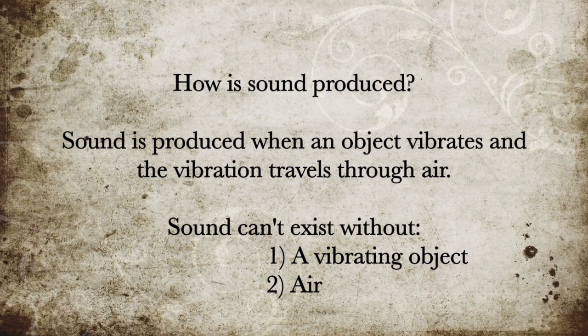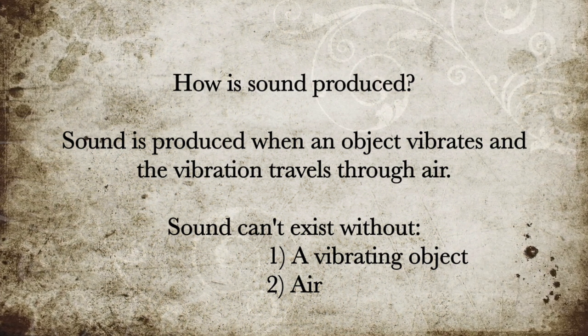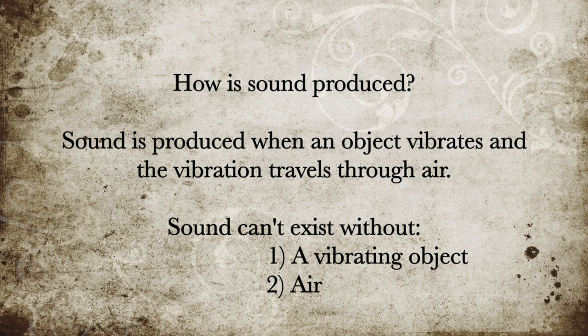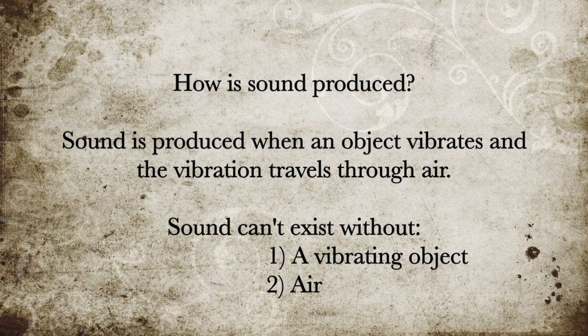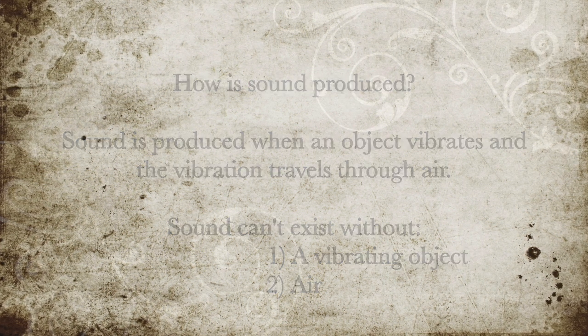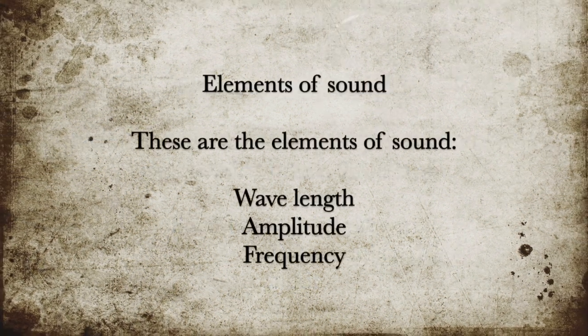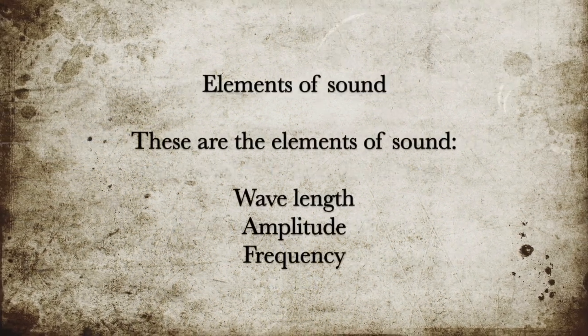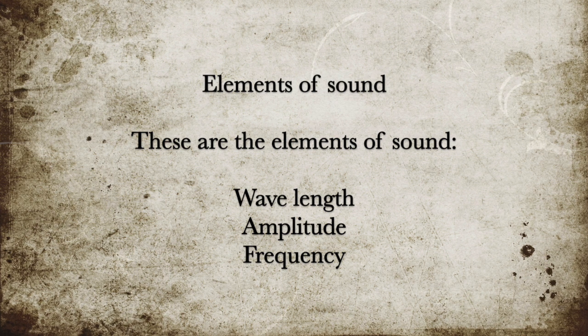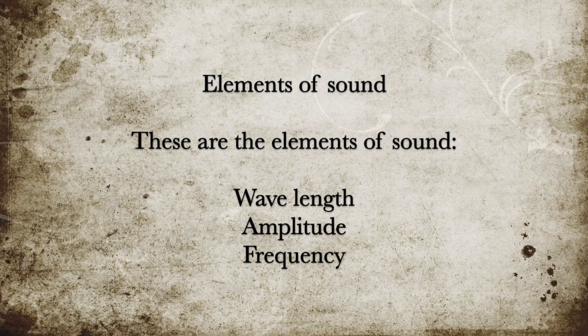How is sound produced? Sound is produced when an object vibrates and the vibration travels through air. Sound can't exist without a vibrating object and air.